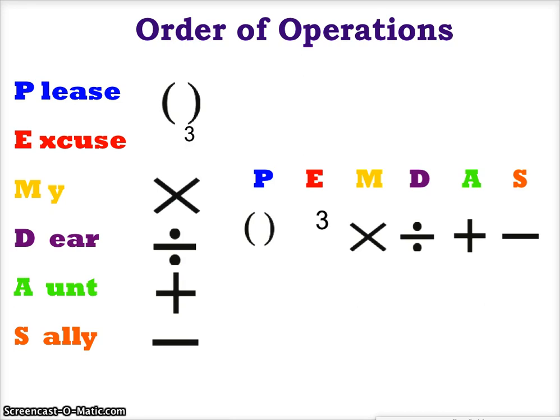The P stands for parentheses, which are the grouping symbols. You will always do the innermost grouping symbols first. Then you will do exponents, followed by multiplication and division left to right, and then addition and subtraction left to right.